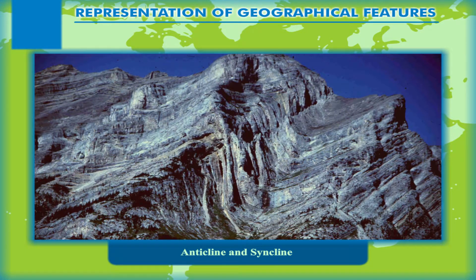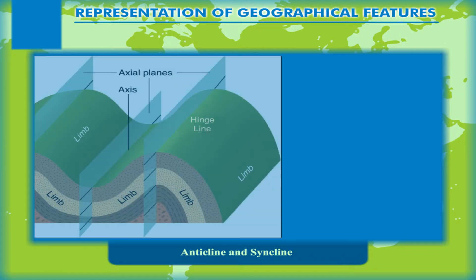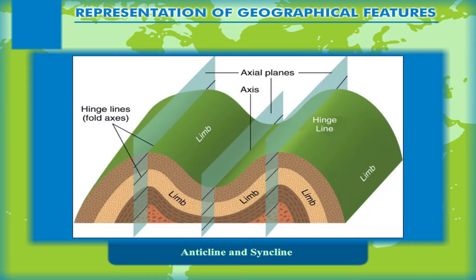Anticline and Syncline: Fold mountains are mountains formed mainly by the effects of folding on layers in the upper part of the earth's crust. The part of the fold rising upwards is called an anticline, and the part of the fold which sinks downwards is called a syncline.